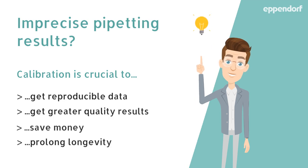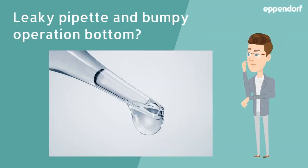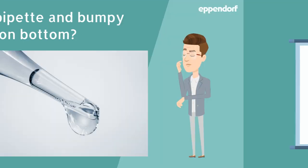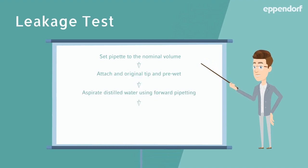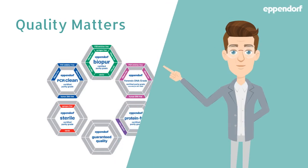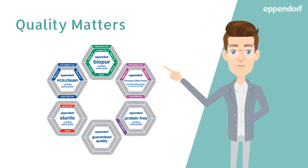Calibration of your liquid handling system is crucial to get reproducible data. Greater quality results saves money on reagents and prolongs the longevity of the pipette itself. Check your pipette every day prior to usage and use the proper pipette tips to run the leakage test.